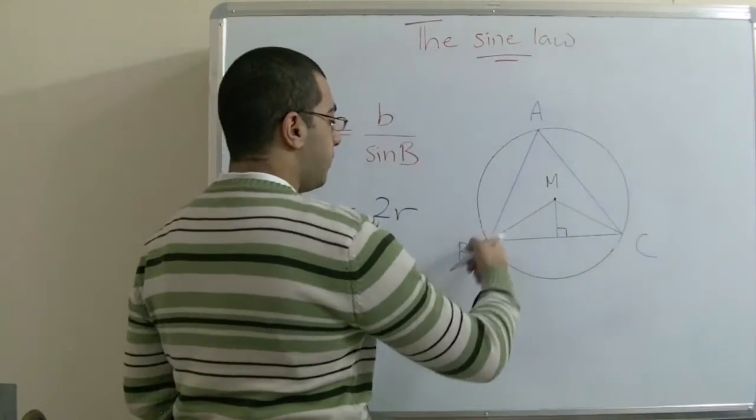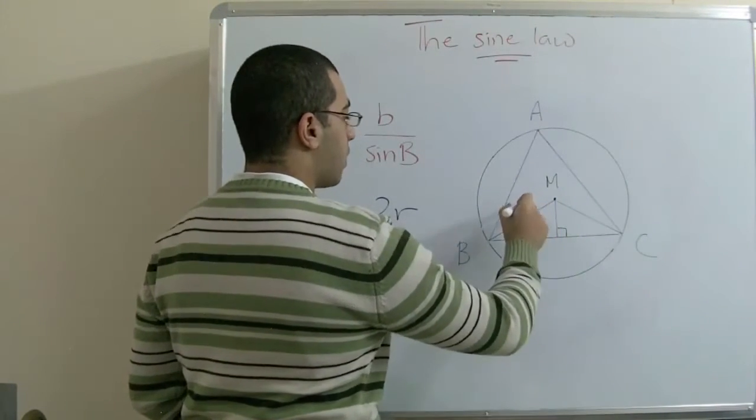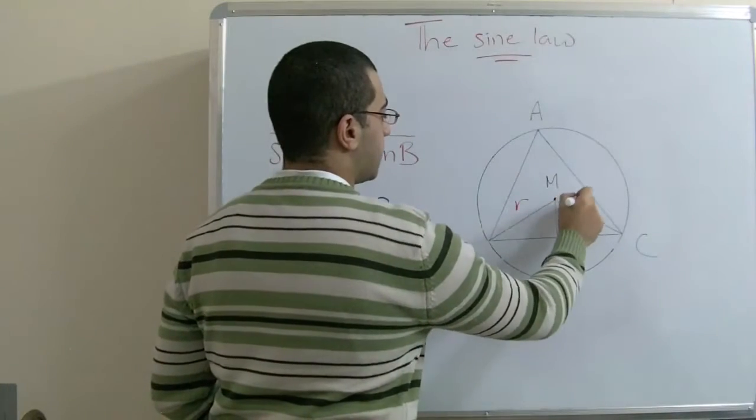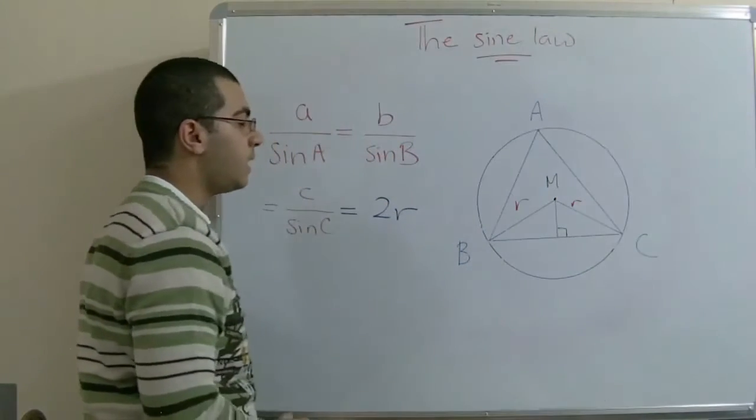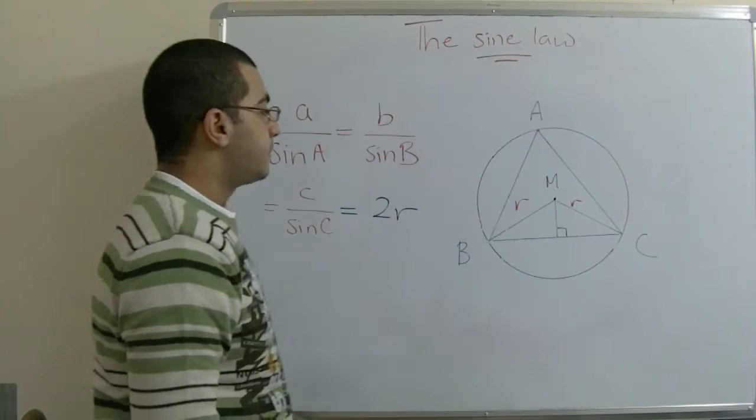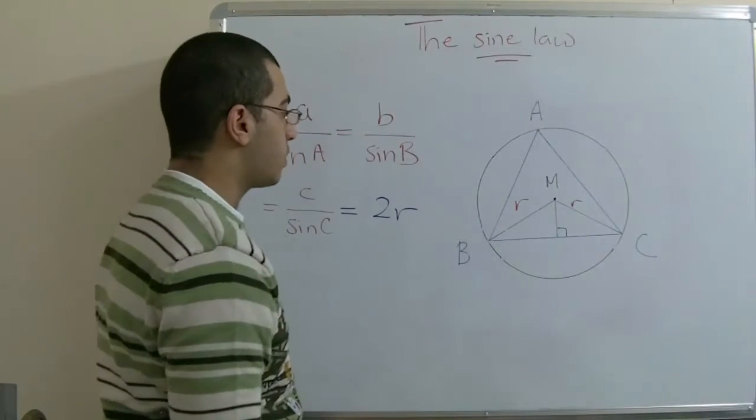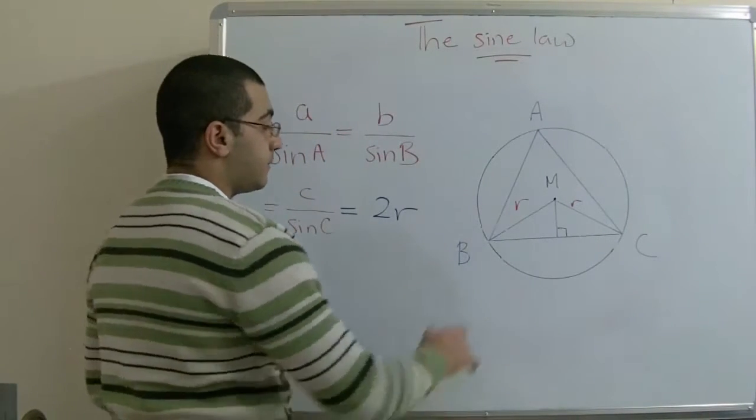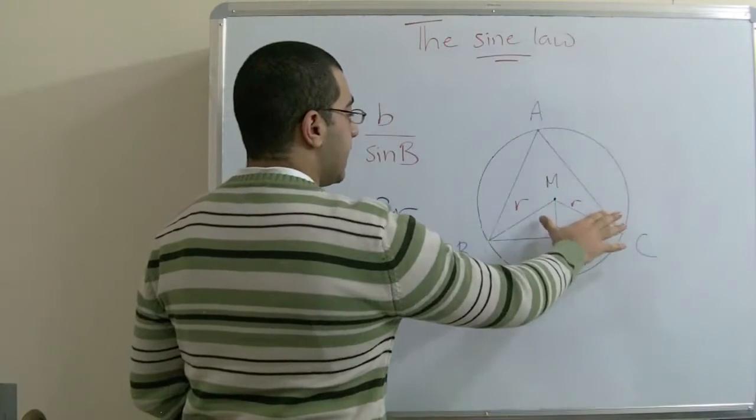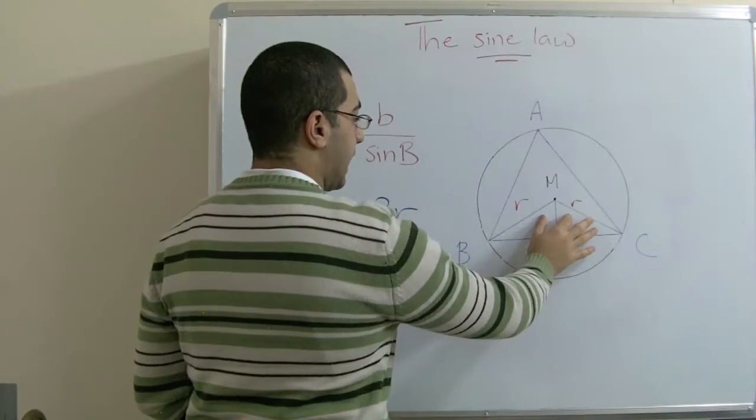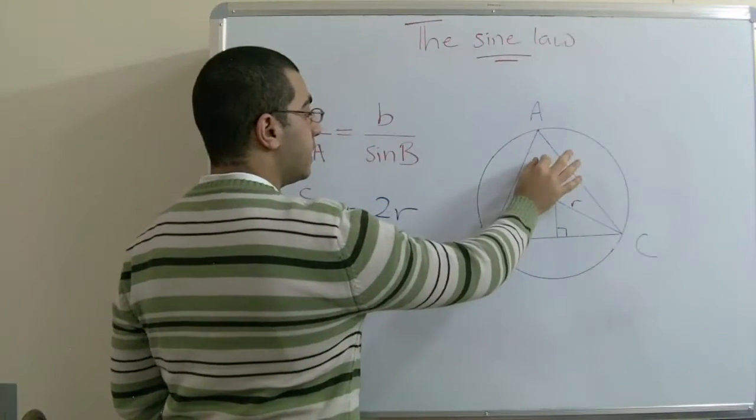BM and CM are both radii of the circle. We have a law in circles that says if there is a central angle and an inscribed angle with the same arc,